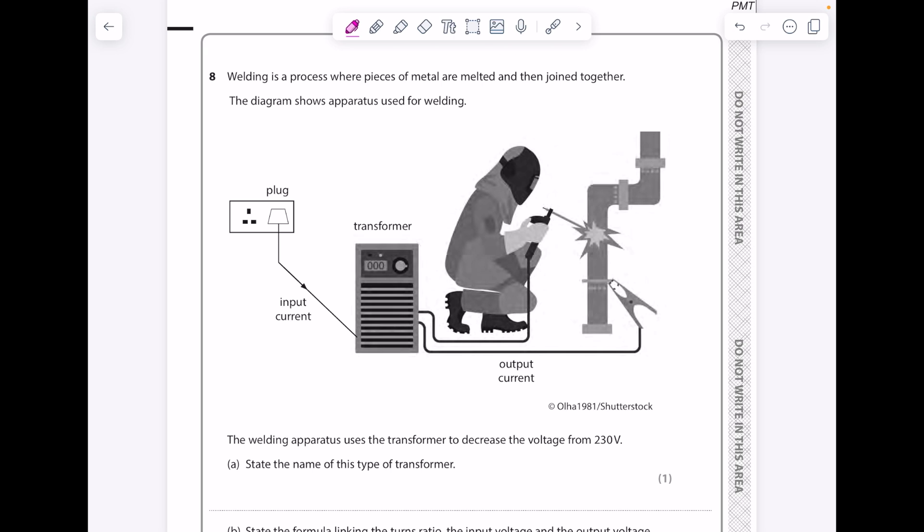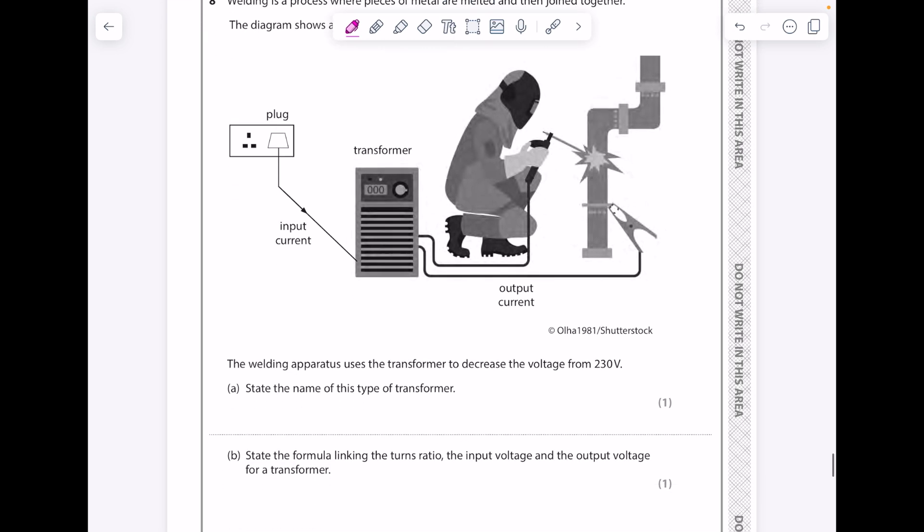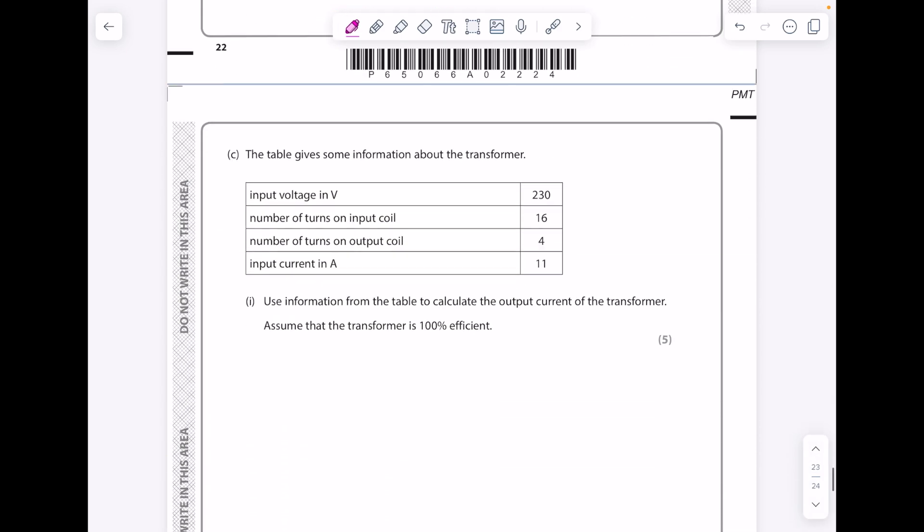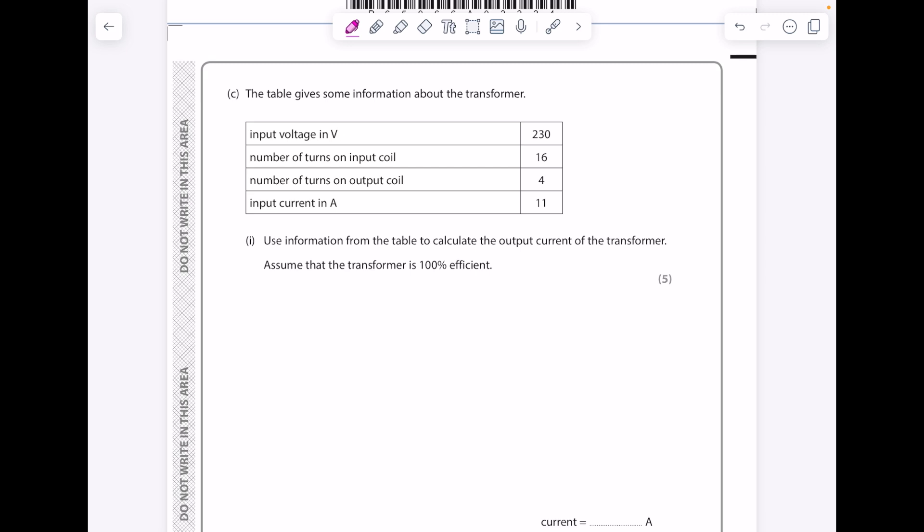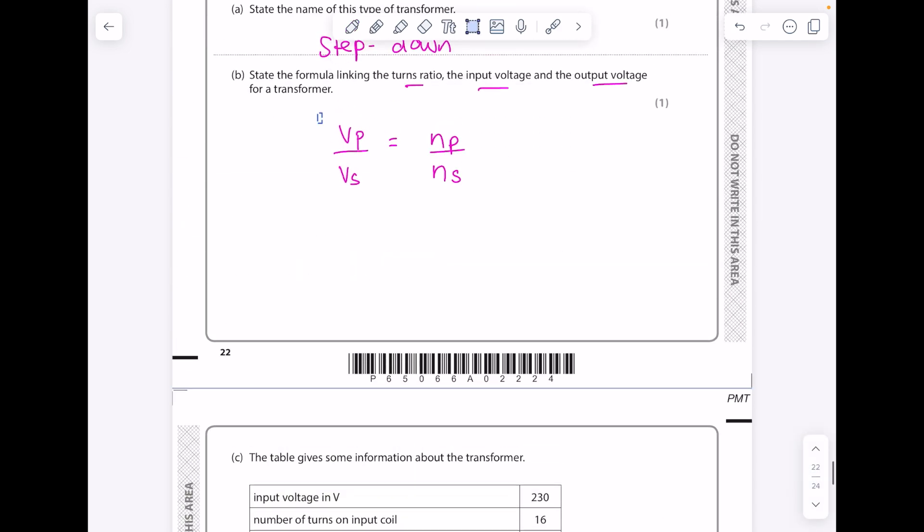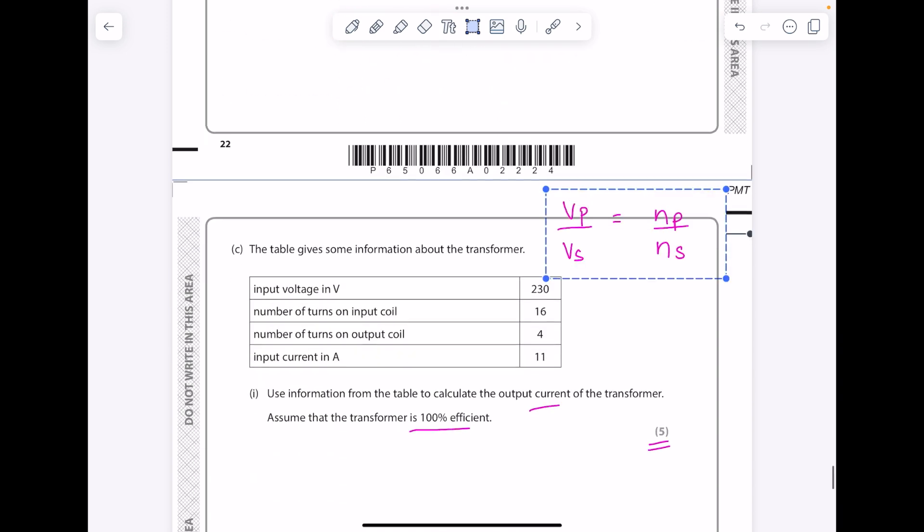Also in paper 2, electromagnetism is transformers. I'll show you an example of a question here. The welding apparatus uses a transformer to decrease the voltage from 230 volts. Because the voltage has been decreased, it must be a step-down transformer. State the formula linking turns ratio, input voltage, output voltage - so you're again going to use that physics formula sheet. Voltage primary over voltage secondary equals number of turns primary over number of turns secondary. The table gives some information. Use the information from the table to calculate the output current of the transformer. Assume the transformer is 100% efficient. It's worth five marks. Please don't worry about this, you're just going to use both equations.